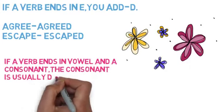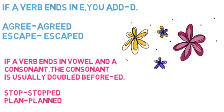If a verb ends in a vowel and a consonant, the consonant is usually doubled before ed, like stop - stopped, planned - planned. You can see double p and double n.